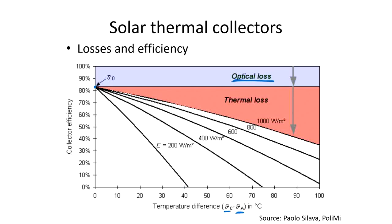As the temperature of the fluid in the collector increases, so do the thermal losses, and the efficiency curve decreases more steeply with increasing temperature difference. The collector has almost the same absolute thermal loss regardless of solar irradiation - once the mean fluid temperature is 30°C above ambient, there is a certain heat loss value. But as solar irradiation increases, the amount of usable heat also increases with the same loss value, so the collector efficiency increases as well.